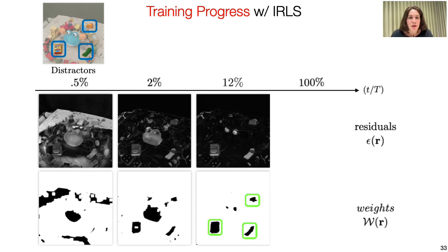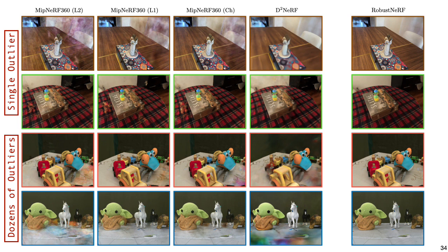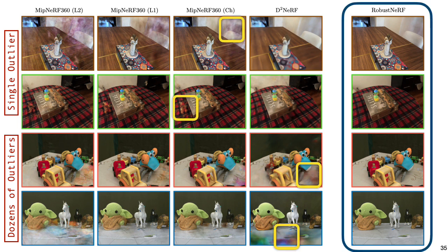We evaluate our method on several datasets containing single or dozens of transient objects. Our results show significant improvements in the clarity of the scenes, both quantitatively and qualitatively, on almost all of them.